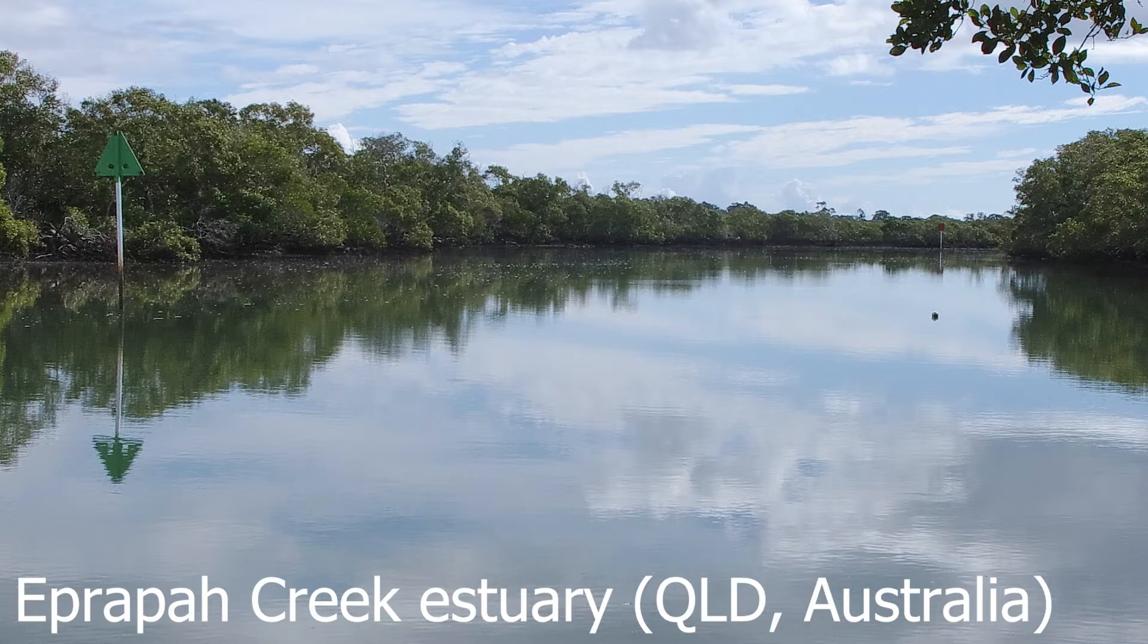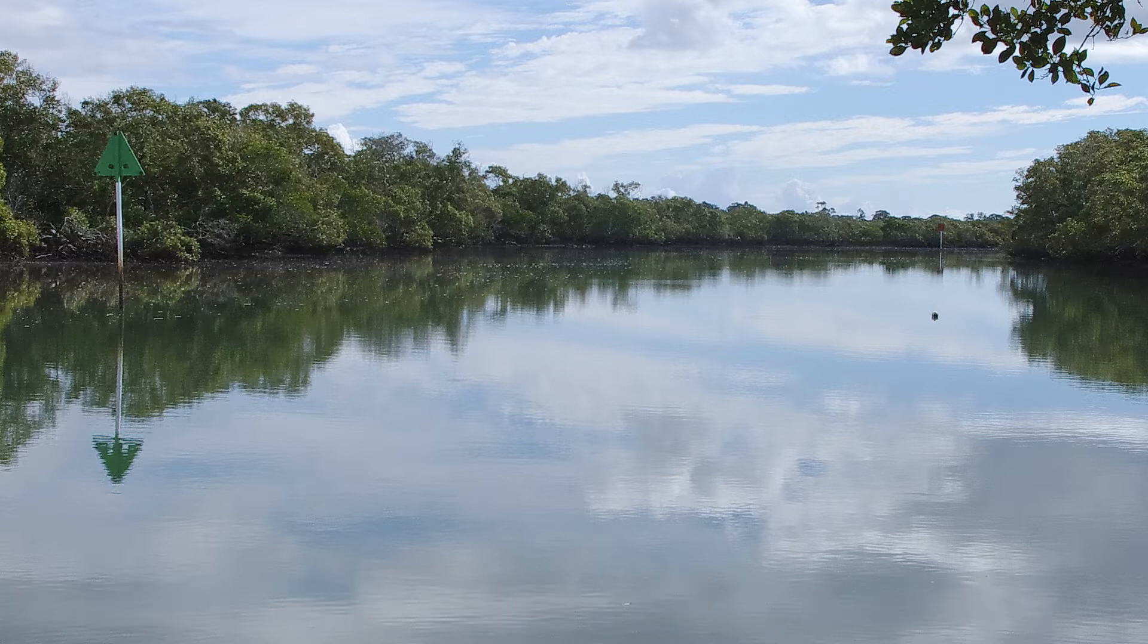An example of unsteady open-channel flow is an estuarine zone, here in the estuarine zone of Apropa Creek in South-East Queensland.